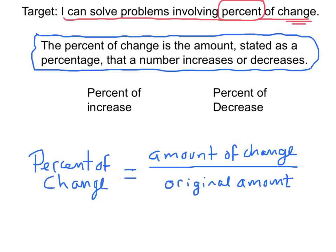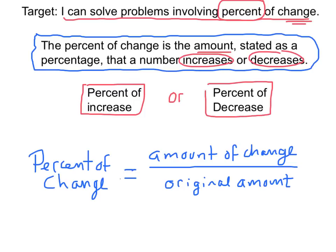The percent of change is the amount stated as a percentage that a number increases or decreases. So you could either have a percent of increase or you could have a situation where there's a percent of decrease. Percent of change can be calculated by finding the amount of change and putting that over the original amount and then multiplying it by 100. To turn it into a percent, you multiply it by 100 or move the decimal point to the right two places.